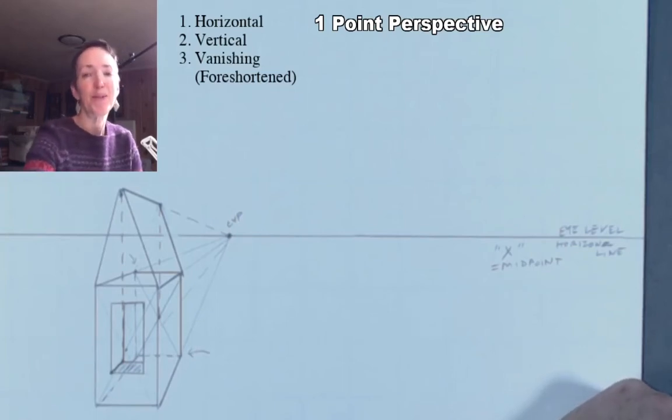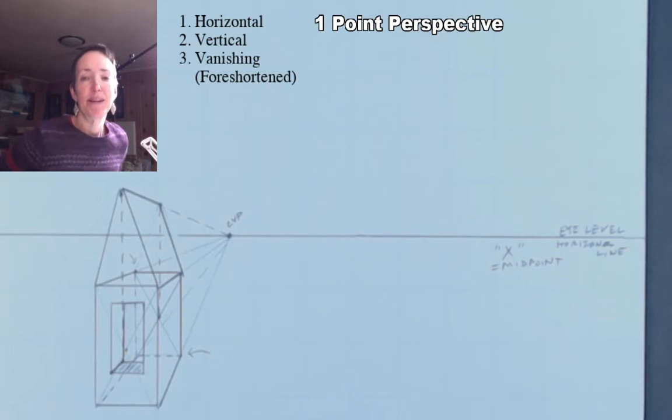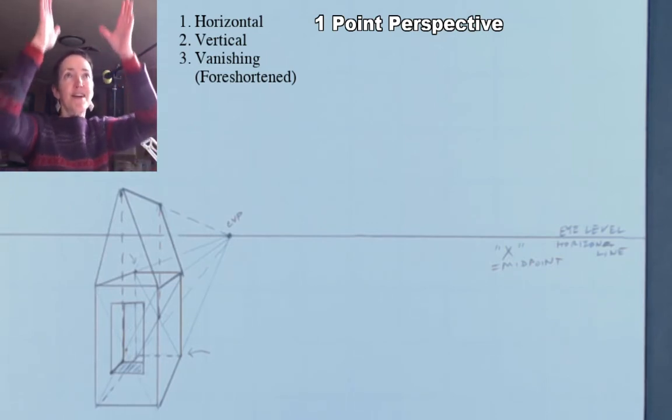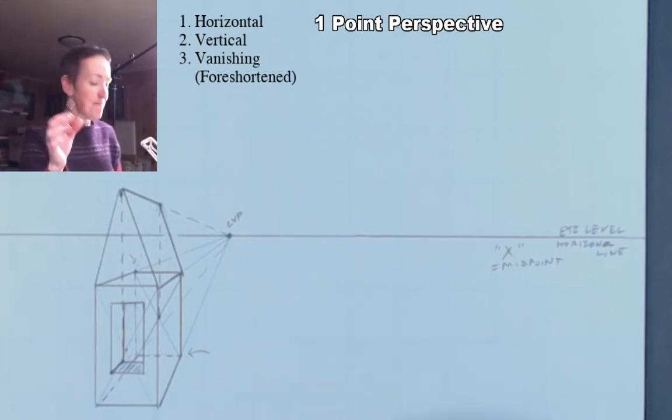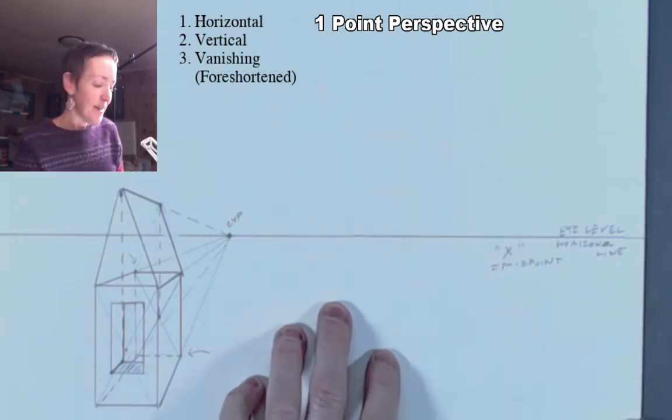We're back and we're continuing with One Point Perspective. The next object I'd like you to draw will be a building that's actually up above our eye level. We're going to pretend that we're building a little tree loft, a loft house. We're going to put some legs on it that will end up hitting the ground plane.